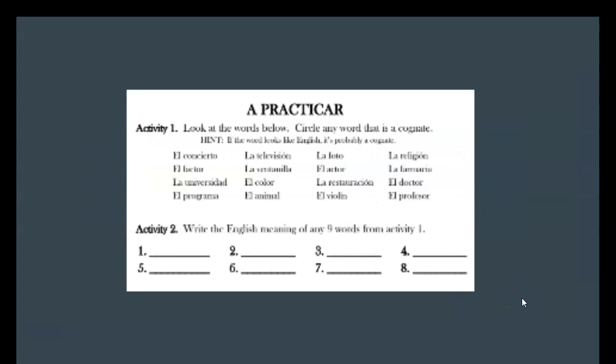So practicar, you're going to look at the words below. You're going to circle any that are a cognate. So any of the ones that sound like what they are going to be. El concierto, el factor, la universidad, el programa, la televisión, la ventanilla, el color, el animal, la foto, el actor, la restauración, el violin, la religión, la farmacia, el doctor, el profesor. Circle any of those that are cognates that mean the same in English and Spanish.